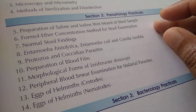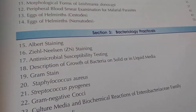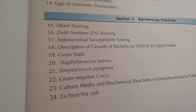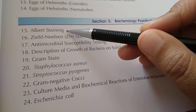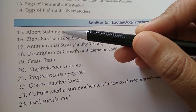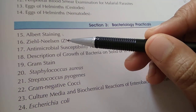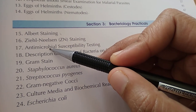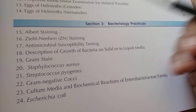Parasitology — I don't know why they have put it before Bacteriology. Anyways, Bacteriology — they are talking about staining. You have Albert Stain. For what do you use Albert Stain? I'm guessing something, I don't want to say if it is wrong. Let's look at it. Ziehl-Nielsen Stain. Antimicrobial Susceptibility Testing.